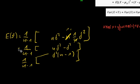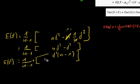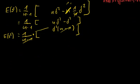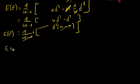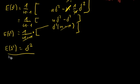Now we can move on. We see a multiplication here: 1/(n-1) times (n-1) — the (n-1) cancels out. And we're left with: the expected value of our sample variance equals sigma-squared. That is our result — we are done.